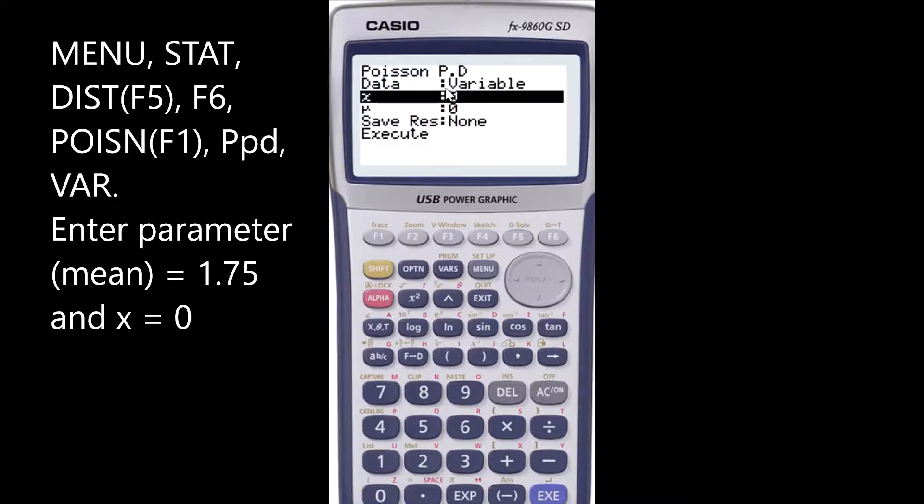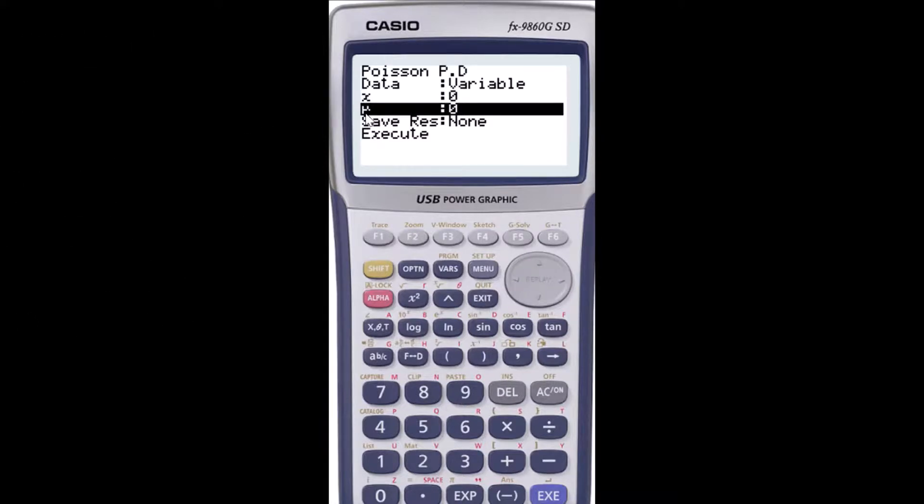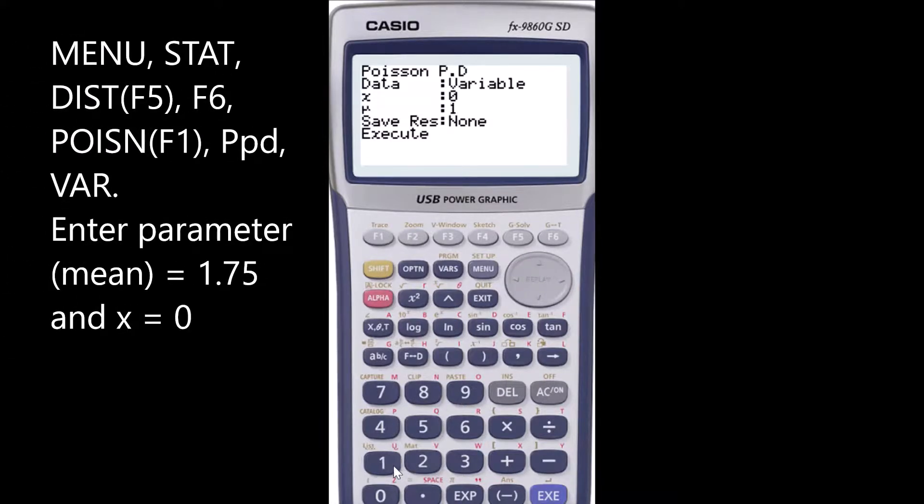And mean, this is the symbol for a mean, and mean is 1.75 accidents per month, so 1.75.